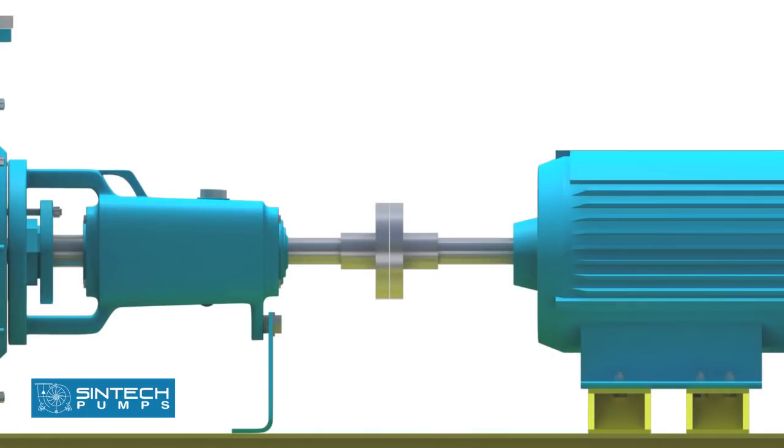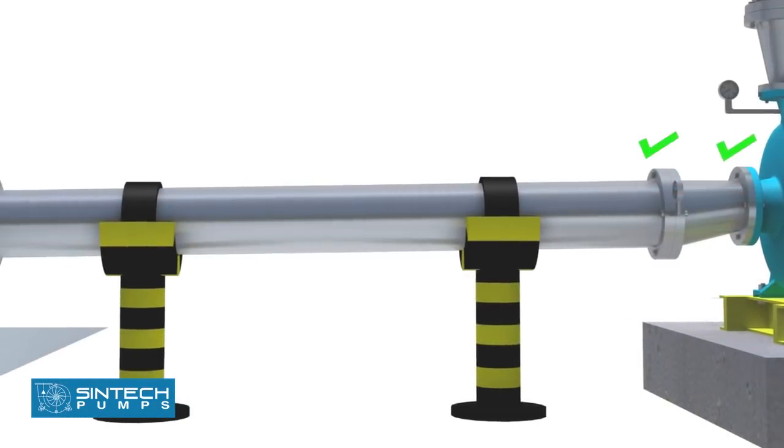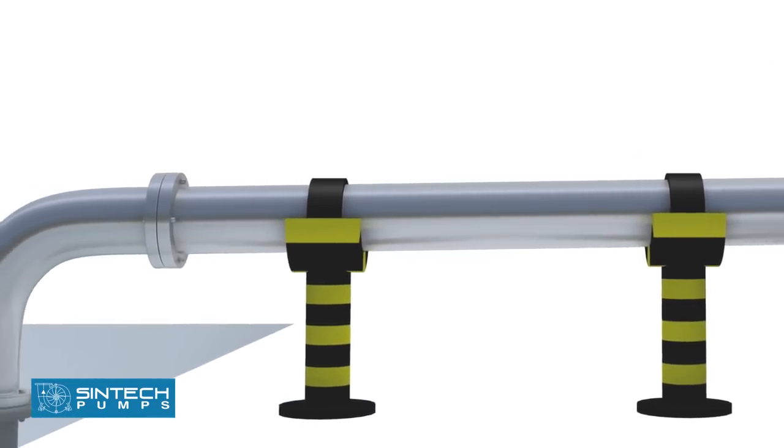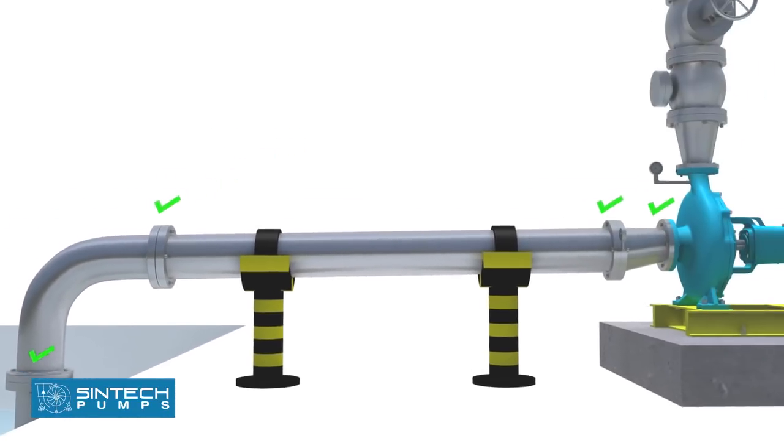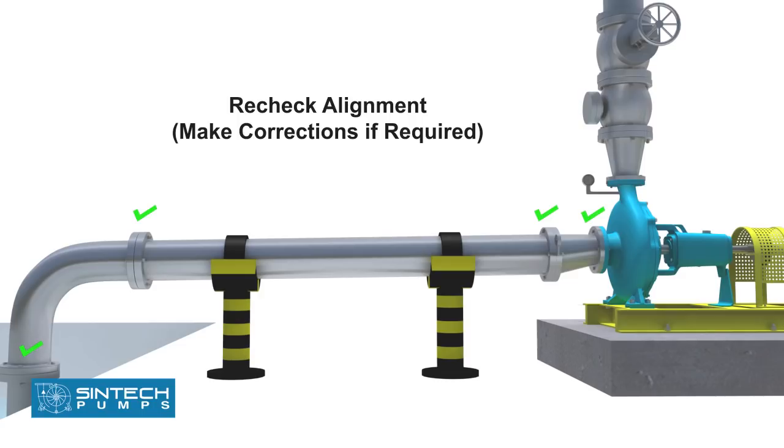Once this is completed, the alignment should be rechecked and similar readings should be obtained. If this is not the case, then the piping should be investigated and suitable corrections should be made. If this is left unattended, it can cause stress on the pump casing.